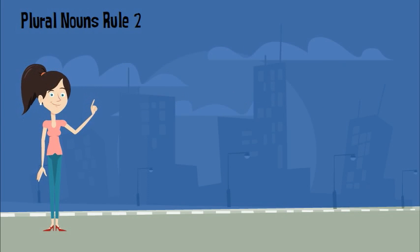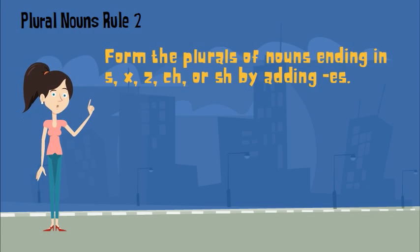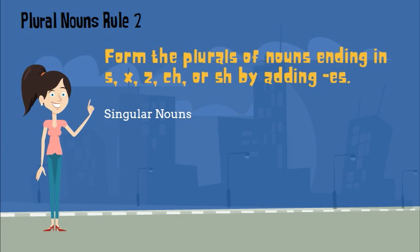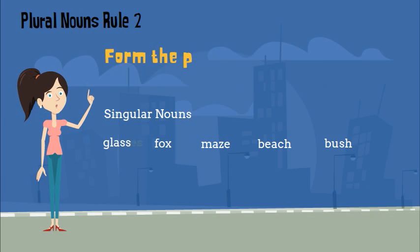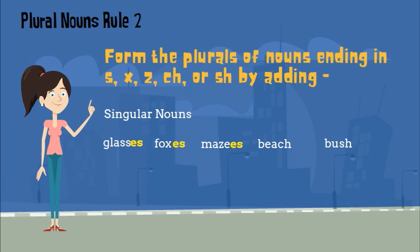Another rule is how to form the plurals of nouns ending in S, X, Z, CH, or SH by adding ES to the end. Here are some singular nouns that would require this rule: glass, fox, maize, beach, and bush. To make them plural, I would add ES at the end — glasses, foxes, mazes, beaches, and bushes.